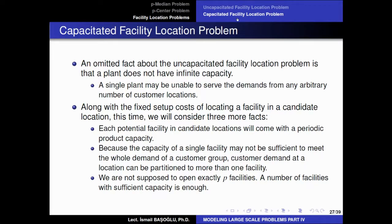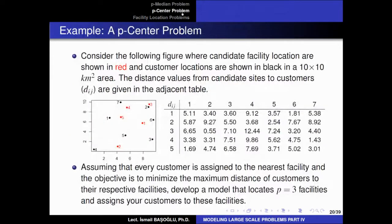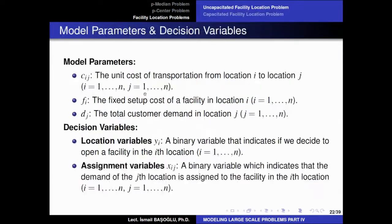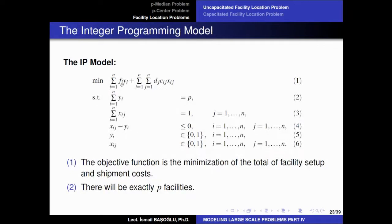A capacitated facility location problem is founded on the basis of the P-median problem. Remember, in the P-median problem, if we add fixed setup costs of constructing a facility at location I in our model, that model becomes the uncapacitated facility location problem. The only difference is the fixed construction costs added in the objective function, multiplied by the decision variable indicating whether we open a facility, summed over the location set.